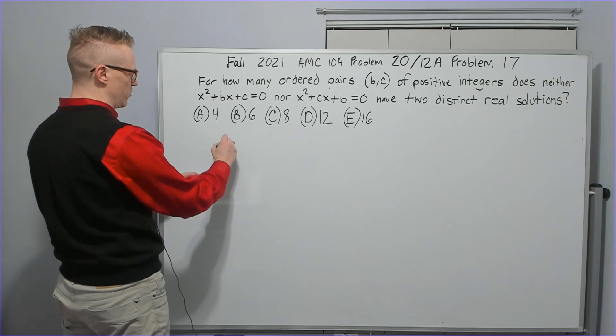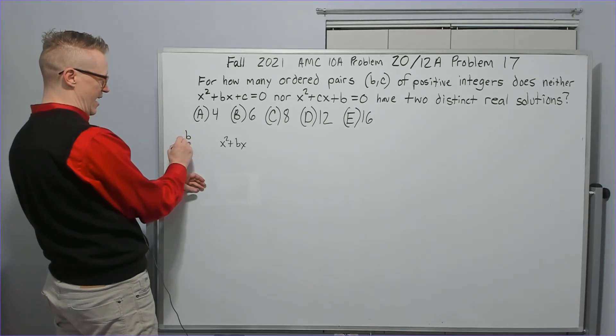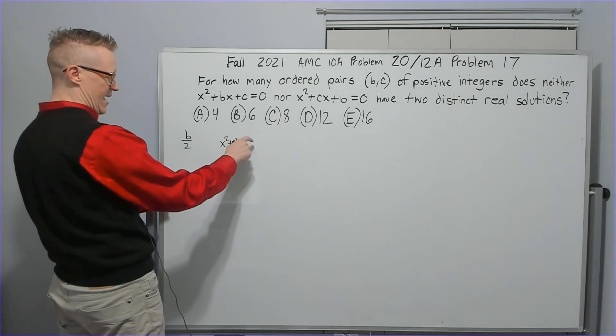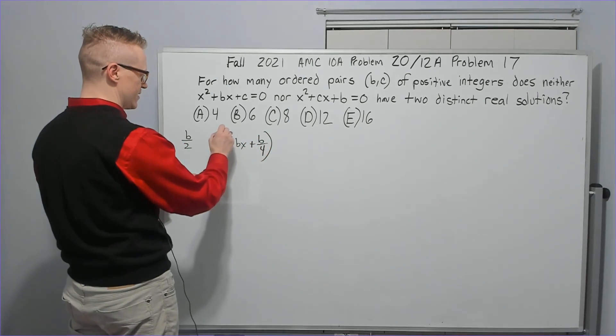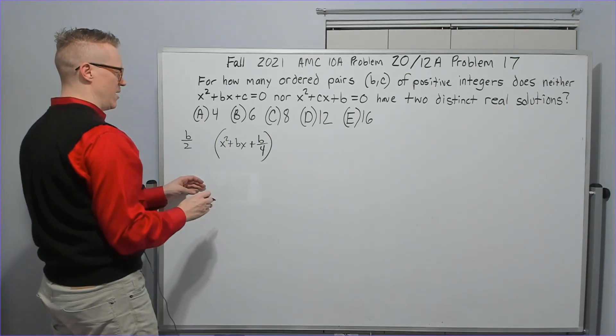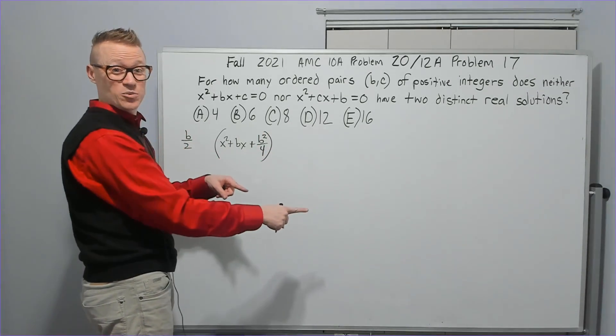To complete the square, which is what I'm going to do, you take this middle term, you cut it in half, you square that, and add it here. Plus b over 4. Like this. But you only put b squared over 4. But you do need to subtract it as well because you can't just randomly add stuff to an expression.